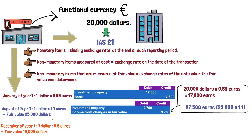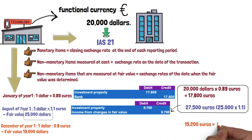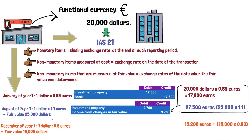Finally, we must recognize the change in fair value as of December of year 1. The fair value is equivalent to 19,000 dollars on this date, and an exchange rate of 0.8 for each dollar. Consequently, the fair value is equal to 15,200 euros.